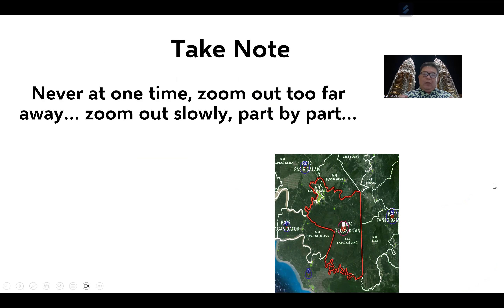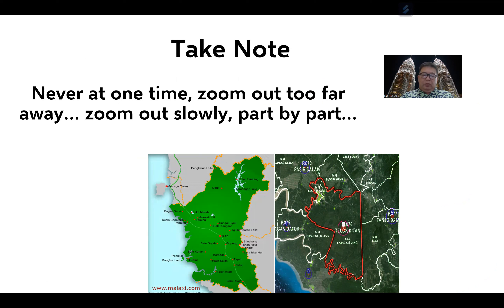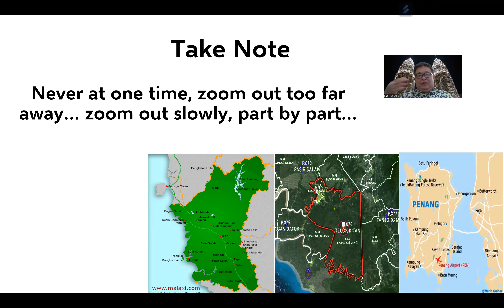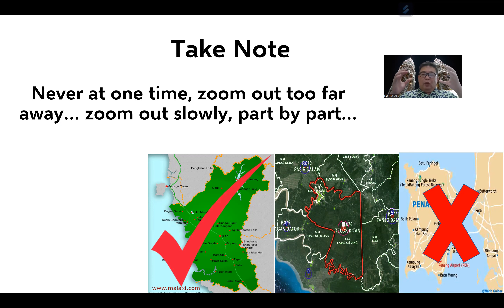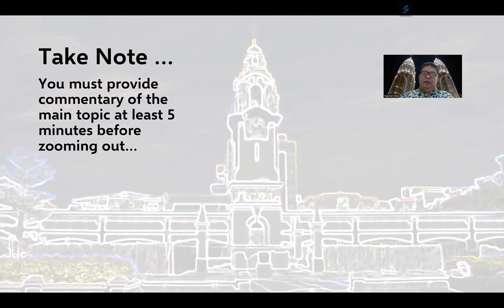A very important point to note: when you are using the zoom out technique, you must speak within that particular state. Never go too far. Speaking on tourist spots within the state of Perak is definitely okay, but never go to places like Penang or Selangor — that is the wrong way. Also, just like the linked technique, always speak at least five to ten minutes on that specific topic before slowly zooming out.